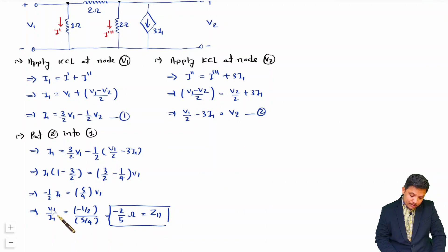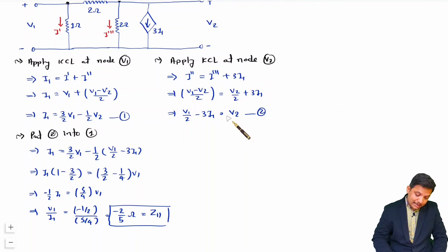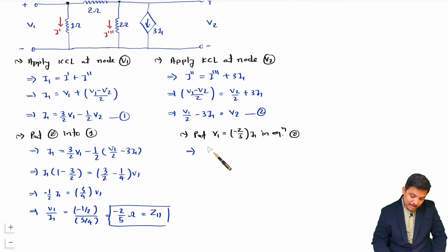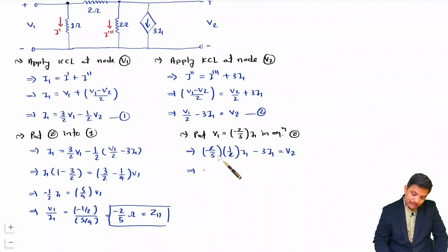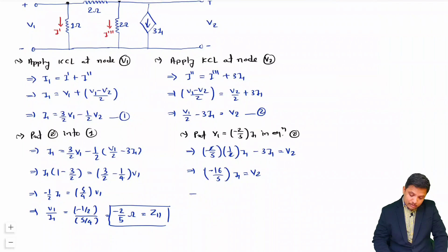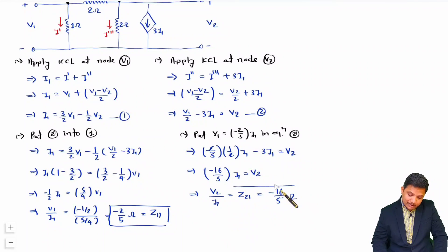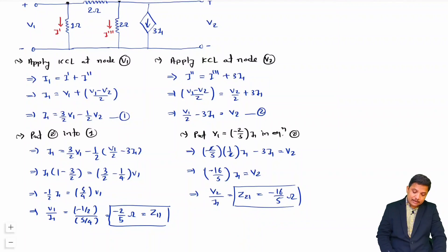Now substituting V1 = (−2/5)I1 back into Equation 2: V2 = (1/2)(−2/5)I1 − 3I1 = (−1/5)I1 − 3I1 = (−1/5 − 15/5)I1 = (−16/5)I1. Therefore Z21 = V2/I1 = −16/5 Ω, which is the forward transfer impedance.